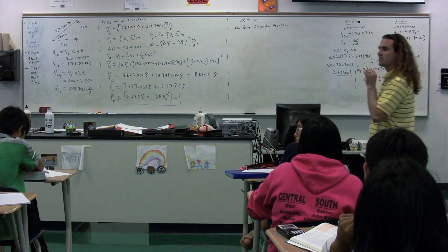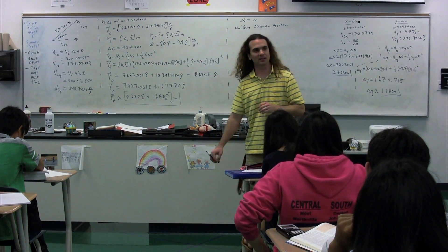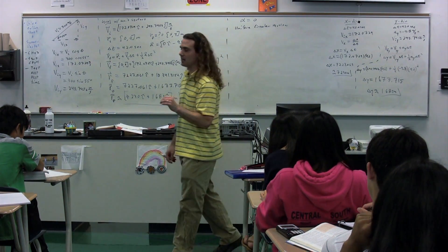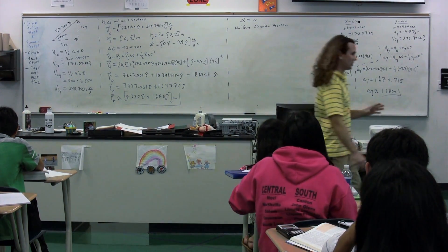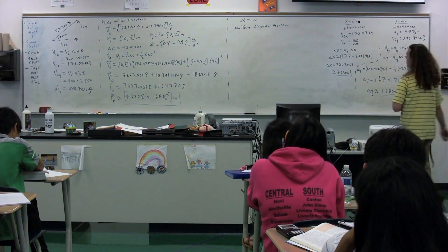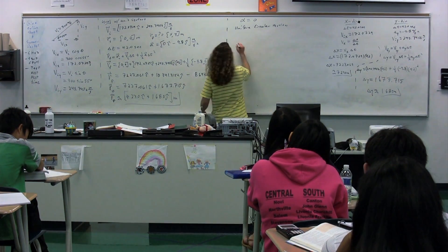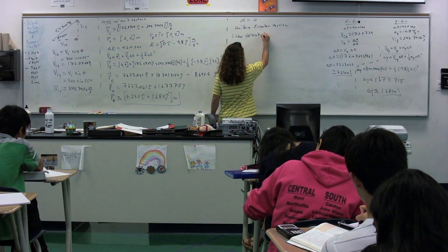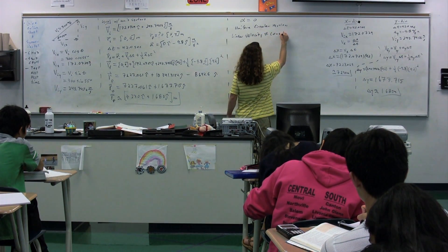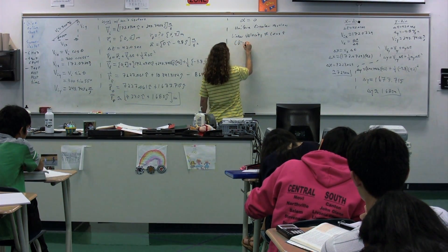Is the linear velocity of the object constant class? No. No. Why is the linear velocity of the object not constant? Class. The direction is changing. Okay. So in uniform circular motion, the linear velocity is not constant. Its direction is changing.